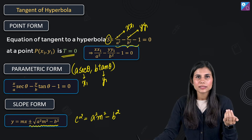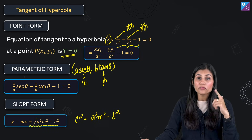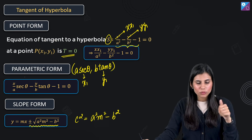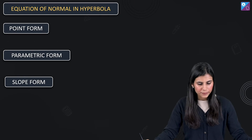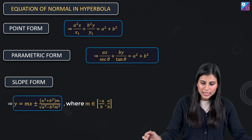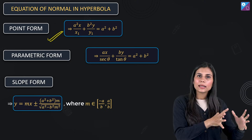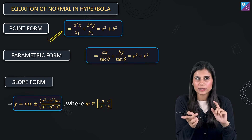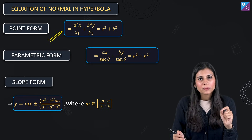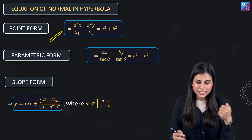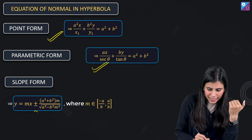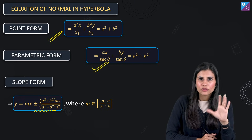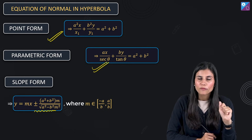Similarly, the equation of normal for hyperbola is studied in the same three forms. In point form, obtain it from the equation of tangent in point form since the slope of the normal is the negative reciprocal of the slope of the tangent at (x1, y1). Substitute the parametric coordinates in place of x1, y1 to get the parametric form. The slope form is a bit complicated but resembles the normal equation for ellipse, which helps you remember it.